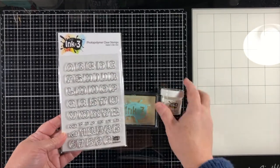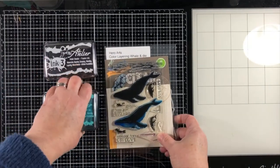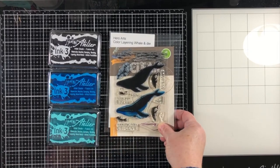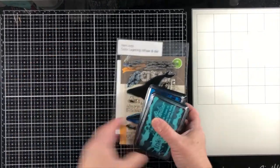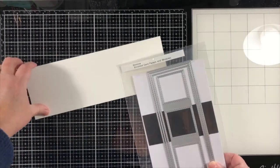I'm using the Fat Alphanumeric stamp set from Ink On 3 with some embossing ink and embossing powder, and then I'm going to use some Atelier ink pads in three different colors with a color layering stamp from Hero Arts.